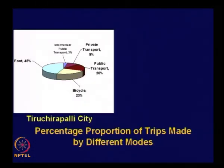Now let us look at another important piece of information pertaining to Tiruchirapalli city — the percentage proportion of trips made by different modes, simply modal split. Trips made by foot: 45 percent; by private transport vehicles including motorized two-wheelers, cars, etc.: 9 percent; intermediate public transport — auto rickshaw, cycle rickshaw, taxi — together 3 percent; bicycle: 23 percent; and public transport: 20 percent.